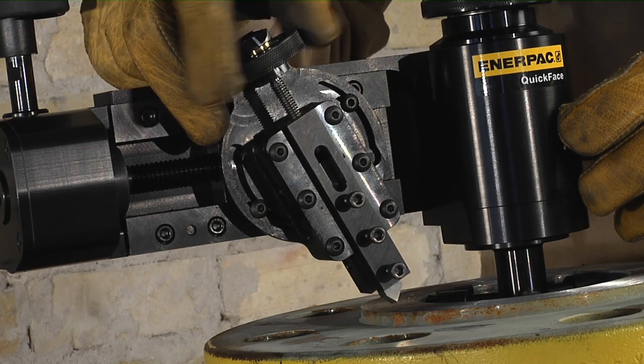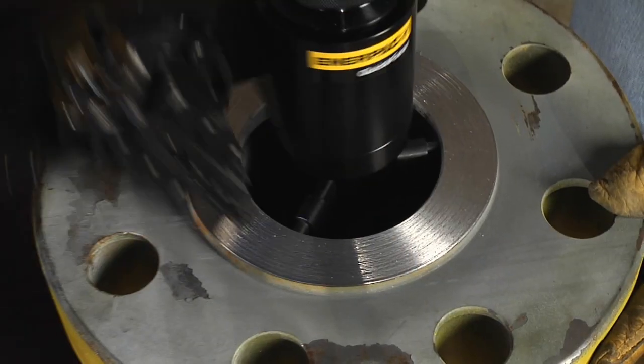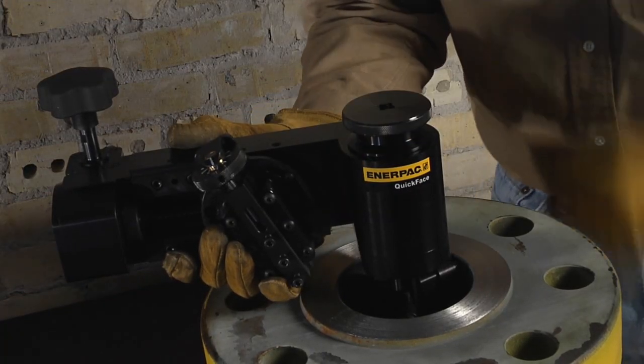The tool arm is then rotated by hand, a worm gear mechanism providing a truly concentric, perfect spiral finish. Removal of the tool is simple and quick.